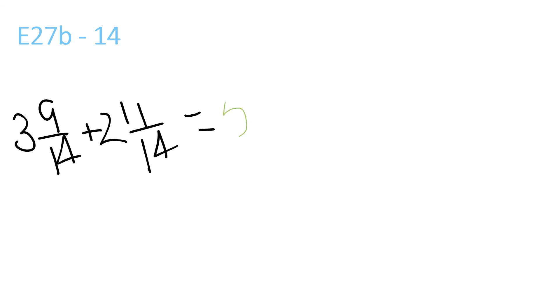3 plus 2 is 5. 9 plus 11 is 20 over 14, which equals 6 and 6 over 14, which equals 6 and 3 over 7, because 2 goes into 6 and 14.